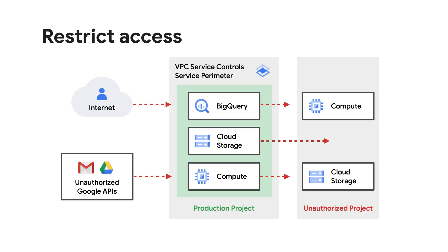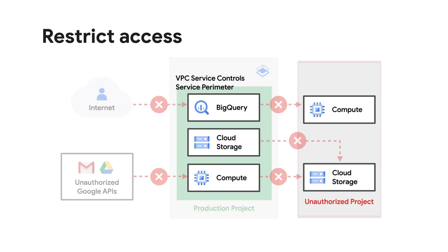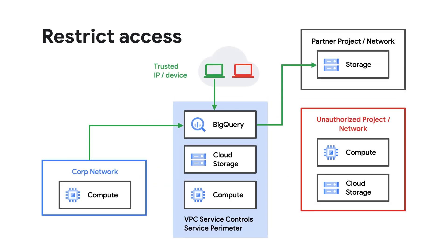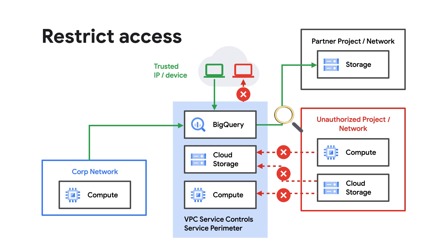By restricting access to only the people and services that need access to your customer data, you make sure only those with a business need even have a chance of seeing that data. By limiting the data that can go between your perimeter and external services, you reduce the potential to exfiltrate data. And with auditable logs, you have the ability to find where data is going.